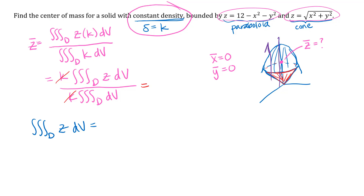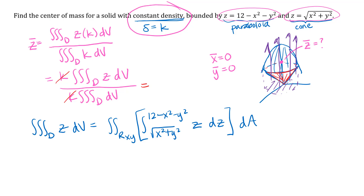You should also notice that the cross sections in the x, y direction are all circles, so the shadow of the region down into the xy-plane is a circle. That tells you to use polar coordinates in the x and y directions. You can either set up the z integral first and leave x, y for later, or use cylindrical coordinates from the beginning — cylindrical coordinates are essentially just polar coordinates in x, y and ordinary rectangular coordinates in z.